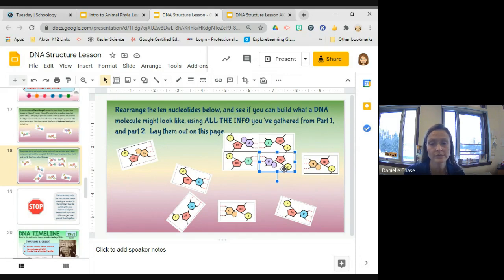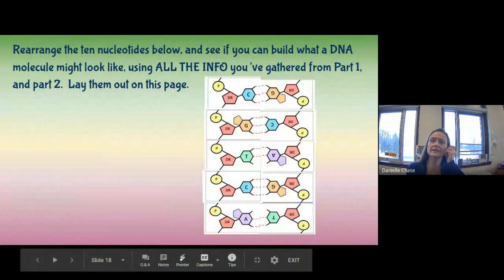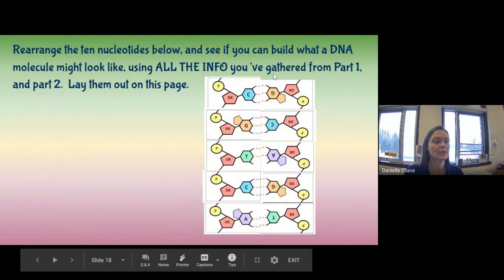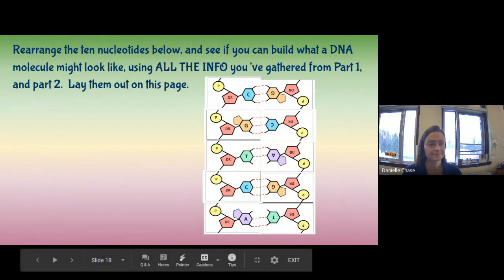Your final structure should look something like the answer key — the order of bases doesn't matter. What matters is that nucleotides with three hydrogen bonds are together, ones with two hydrogen bonds are together, and the phosphate-sugar alternates all the way down each side. Then it will be a correct DNA image.